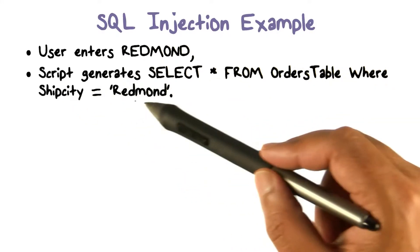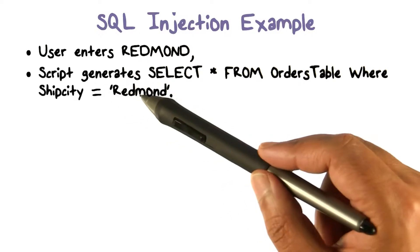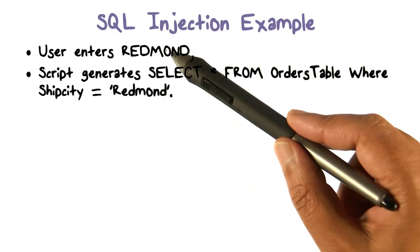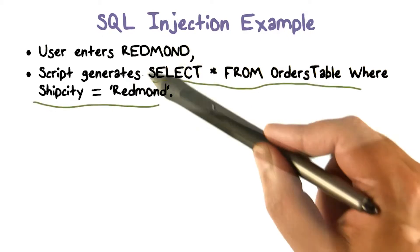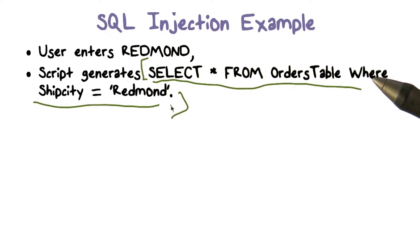the script is going to generate the query that says SELECT * FROM OrdersTable. If you go back and look at the code, where basically it's going to replace the placeholder that we had for ship city by this input that was just provided by the user. The script is generating this, and this is what is going to get submitted to the database.